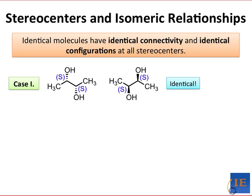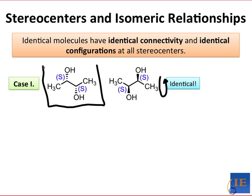Another way to tell they're identical is to turn this molecule upside down. That would push the OHs to the back and pointing up on the left and down on the right, and that structure would be perfectly superimposable on the molecule on the left.